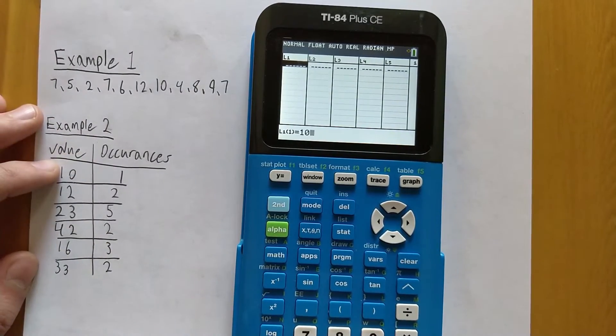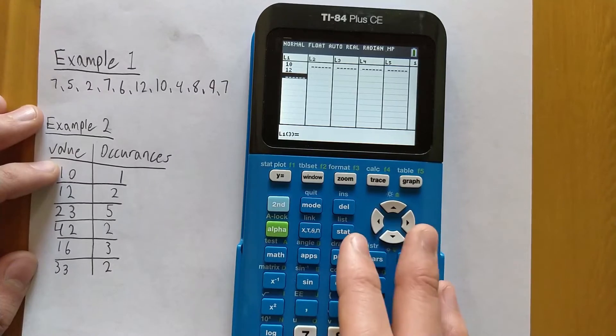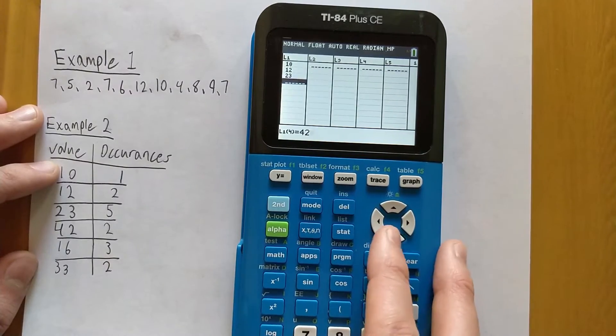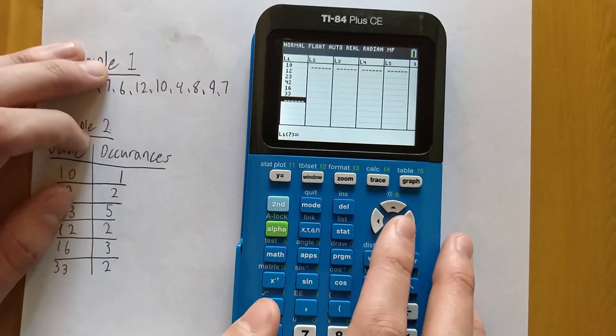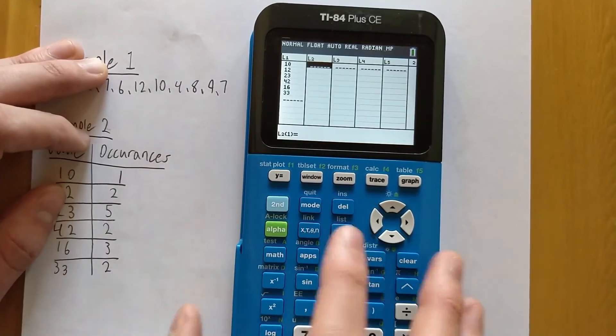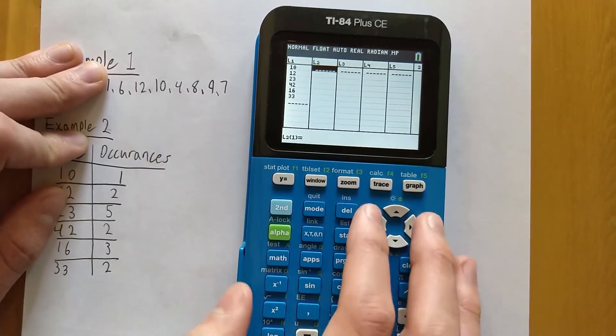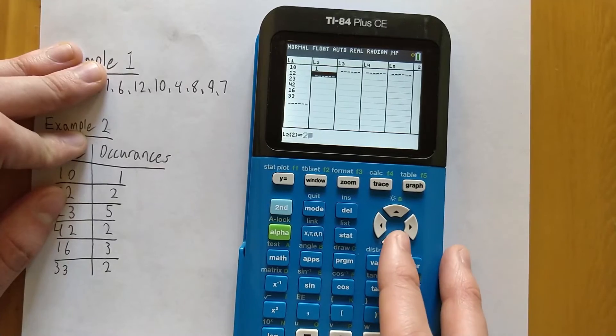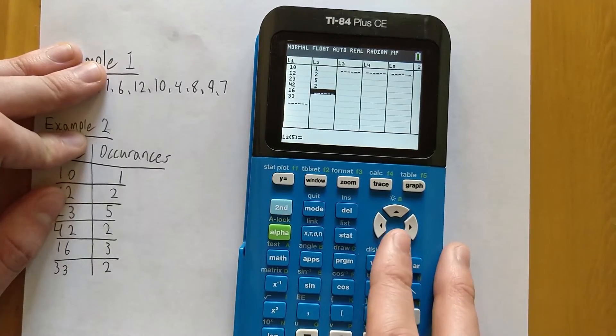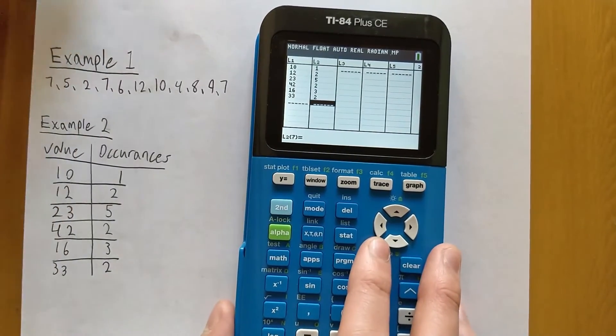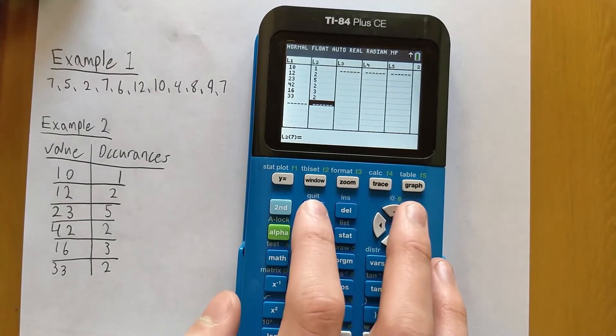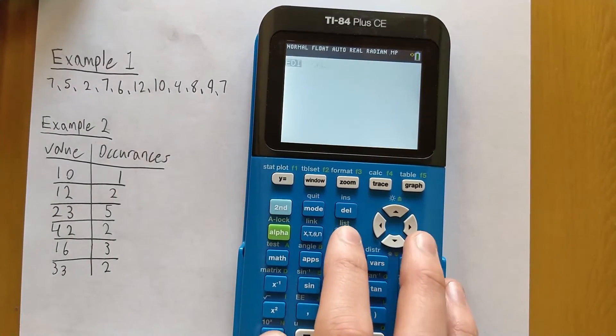So 10, 12, 23, 42, 16, and 33. And then we can type in the number of occurrences, or the frequency list, into L2. So we have 1, 2, 5, 2, 3, and 2. And now we can get out of this by doing Second and then Mode, which is Quit.